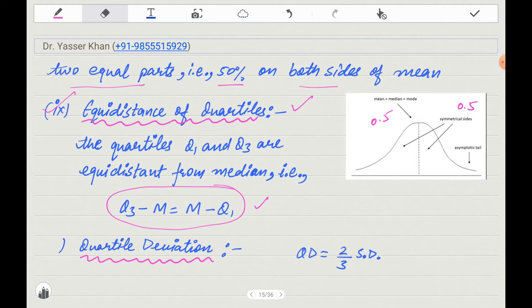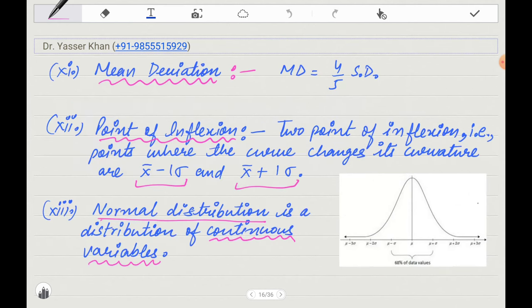Next is the quartile deviation. When there is normal distribution, what is the quartile deviation? Two-thirds of standard deviation. This is the indirect question. You give standard deviation and ask for quartile deviation, or give mean deviation. The mean deviation is 4/5 of standard deviation. So you give mean deviation and say find standard deviation, and it is normal distribution.